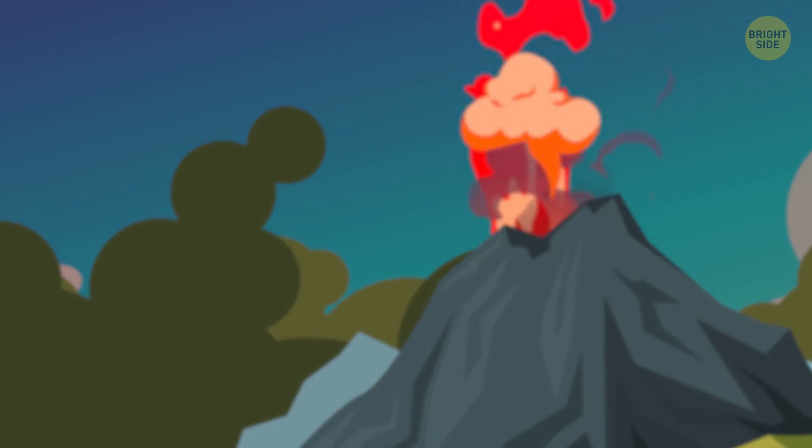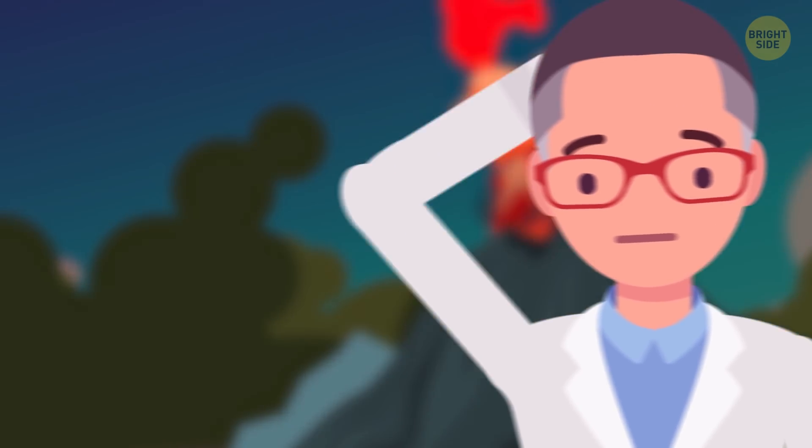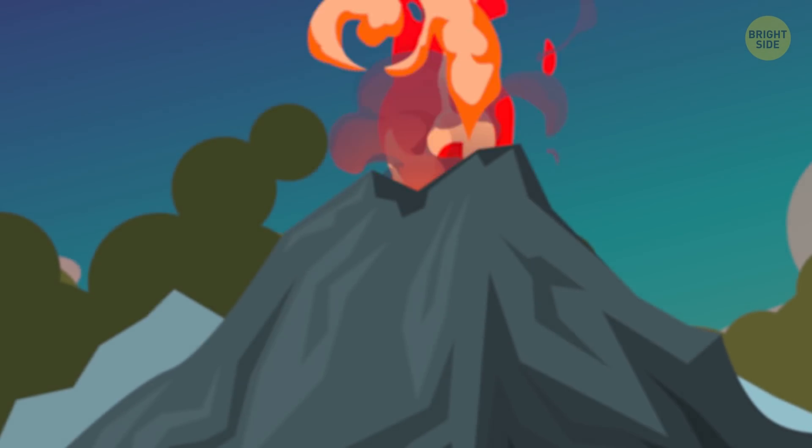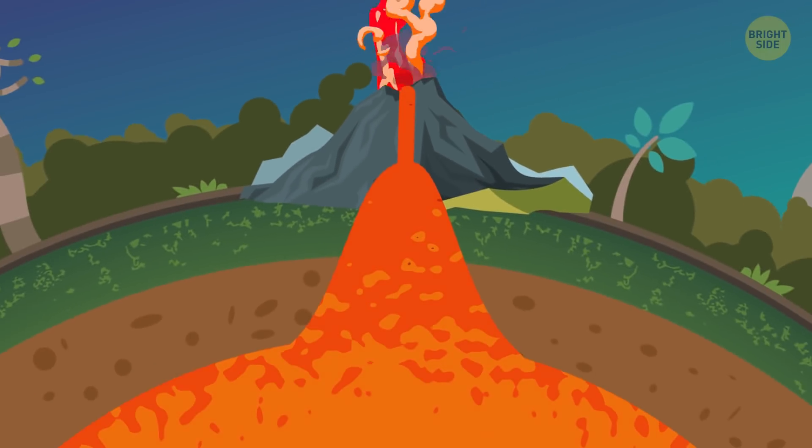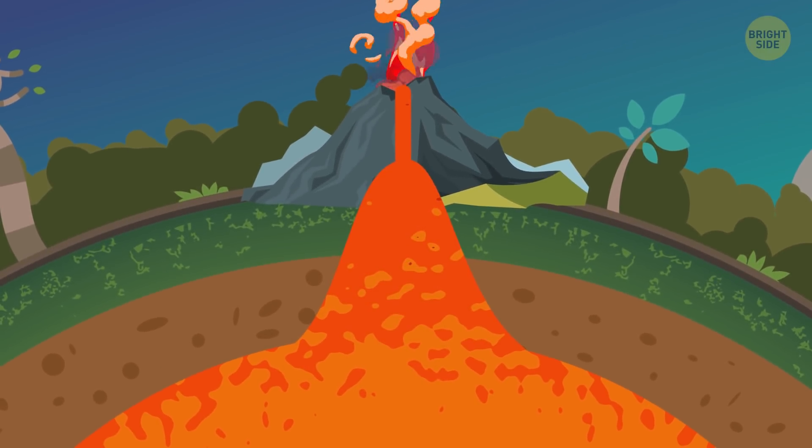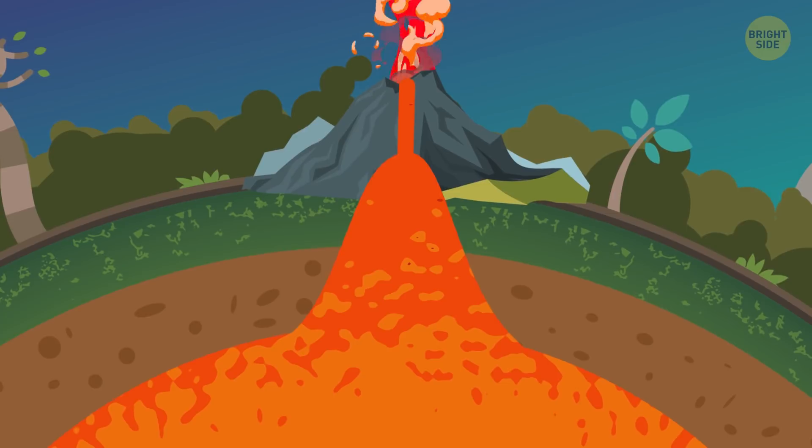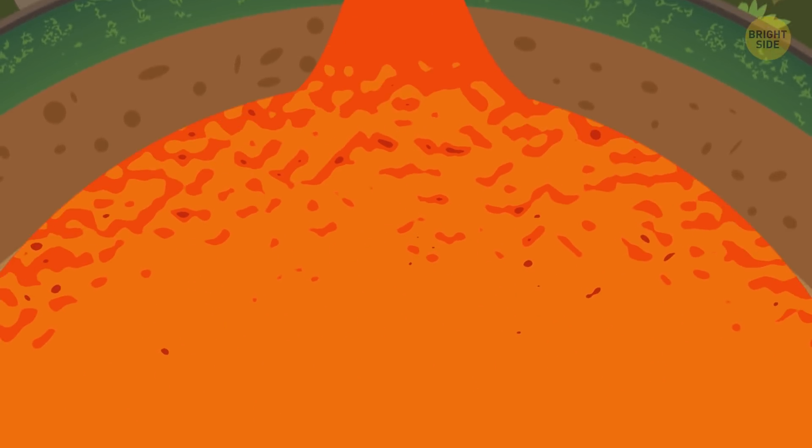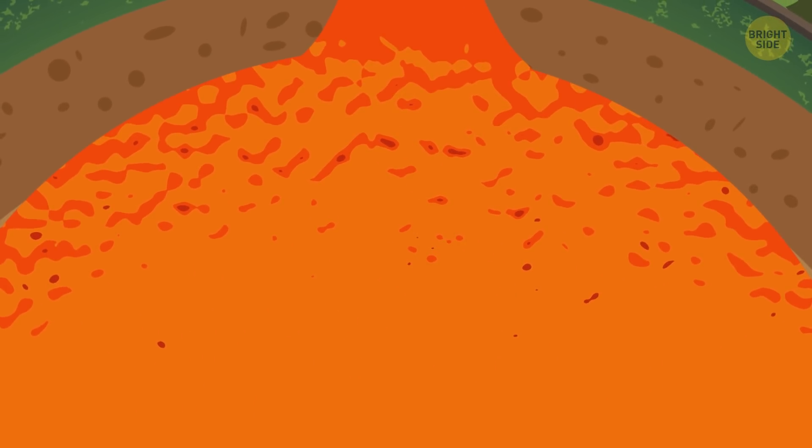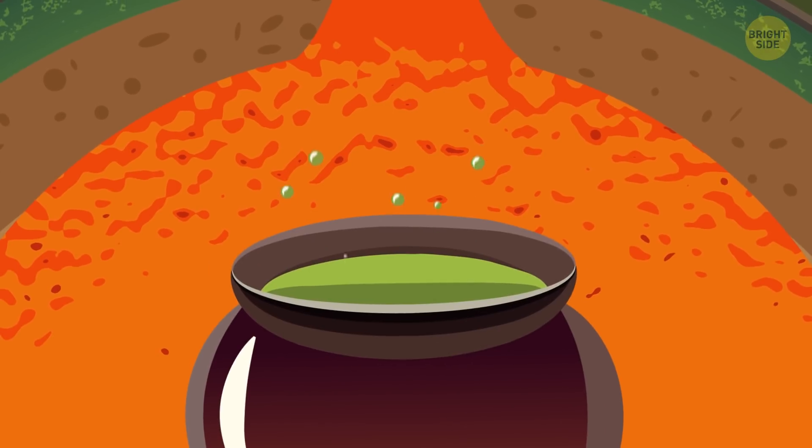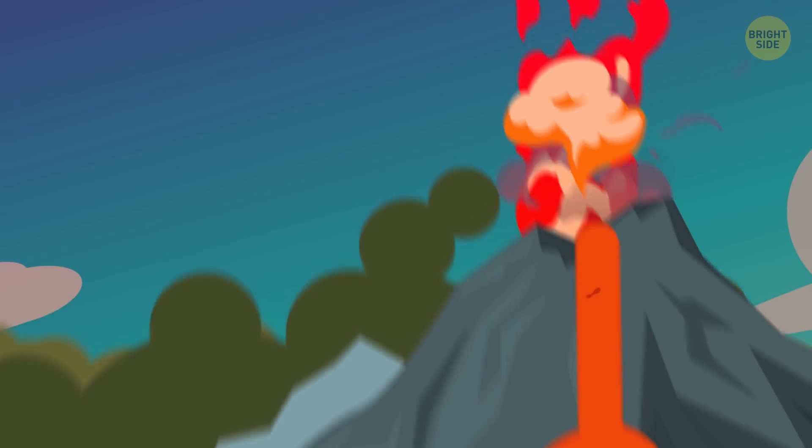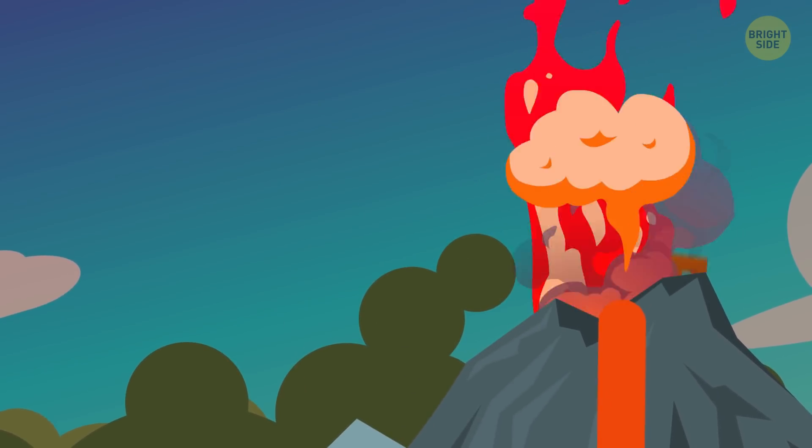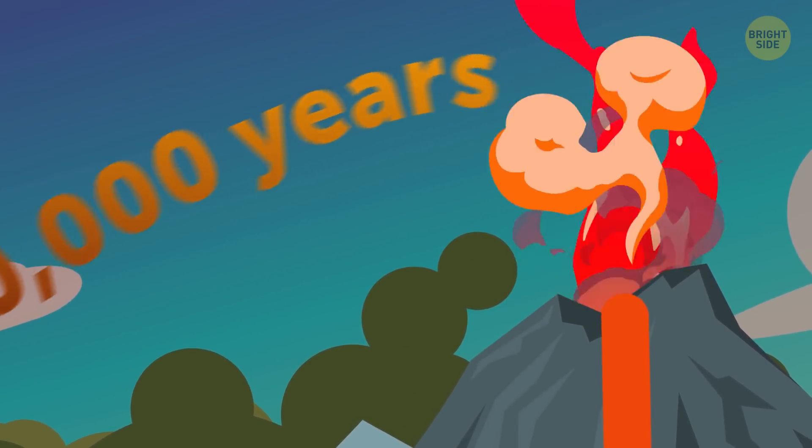What devastates scientists the most is how little they know about supervolcanoes. Because those aren't just some overgrown fire mountains, they are way more complicated than that. Appearing so deep underground and extending for hundreds of miles, supervolcanoes don't follow the ways of all others. Experts are still unsure about the processes that trigger them, especially since supereruptions thankfully don't take place more often than every 50,000 years or so.